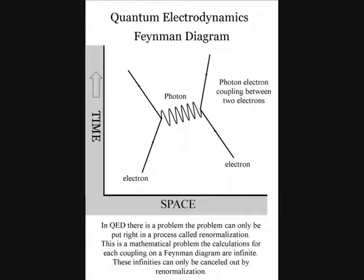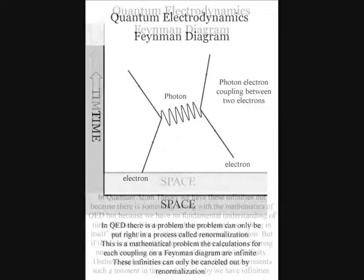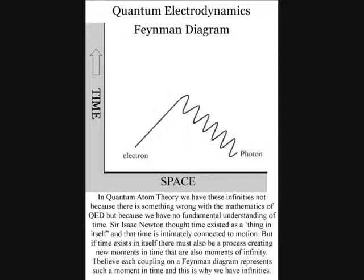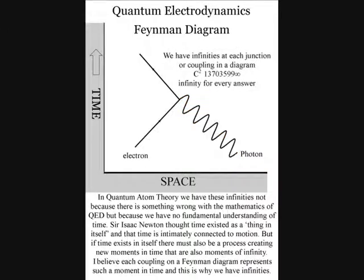The calculations for each coupling on a Feynman diagram are infinite. These infinities can only be cancelled out by renormalisation. I believe we have these infinities not because there is something wrong with the mathematics of quantum electrodynamics, but because we have no fundamental understanding of time.